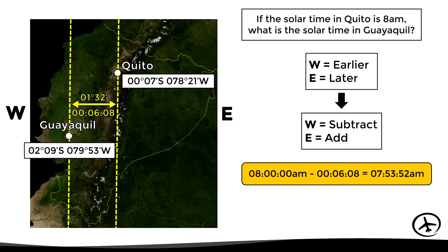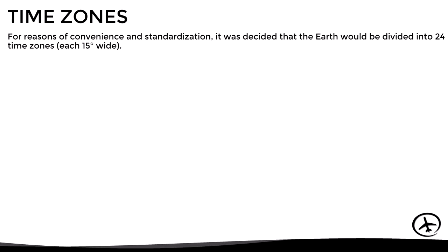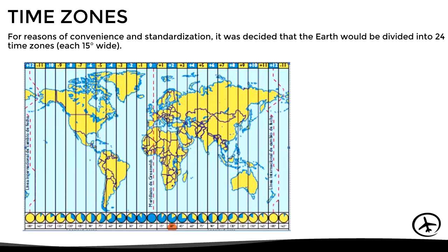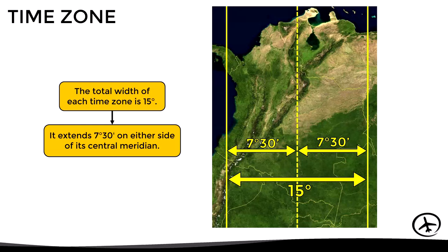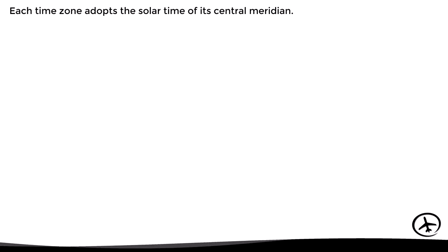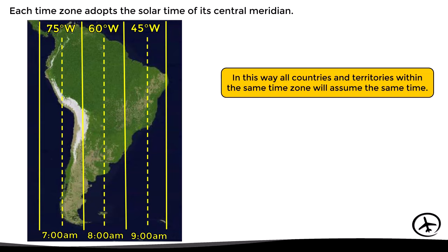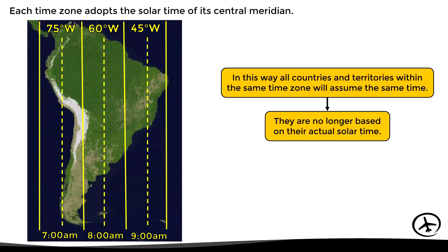Having time differences between nearby cities is a big problem for establishing schedules and coordinating operations. So, to standardize time in a certain area, time zones were created. For reasons of convenience and standardization, the Earth was divided into 24 time zones, each 15 degrees wide. Since 15 degrees equals one hour, each time zone differs by one hour. Each time zone adopts the solar time of its central meridian, so all territories within the same zone assume the same standard time.